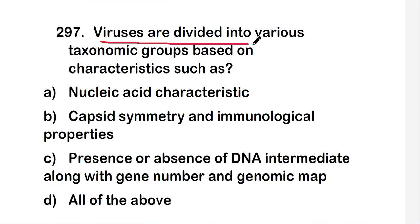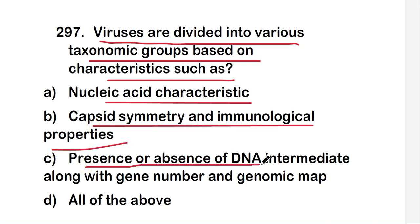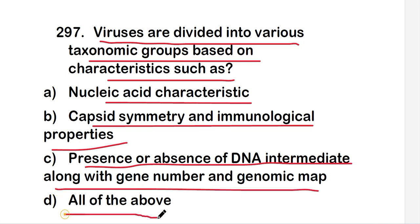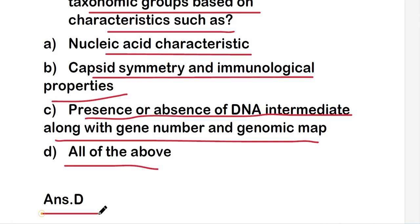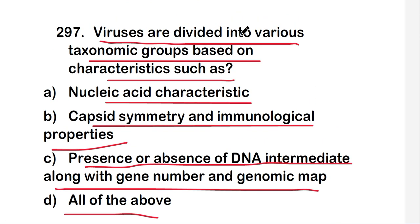Next question: viruses are divided into various taxonomic groups based on nucleic acid characteristics, capsid symmetry and immunological properties, presence or absence of DNA intermediate along with gene number and genomic map, or all of the above? The right answer is option D, all of the above. All these characteristics are used for viral taxonomic classification.